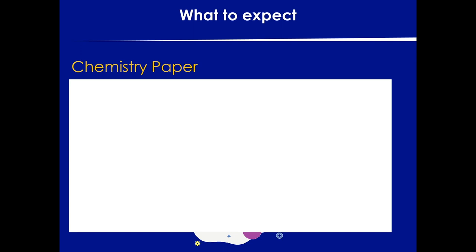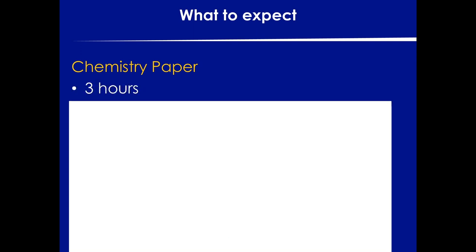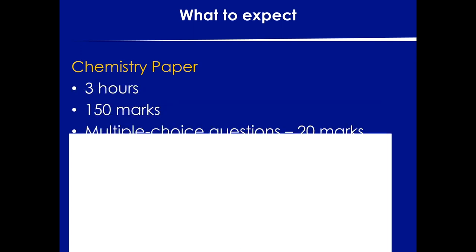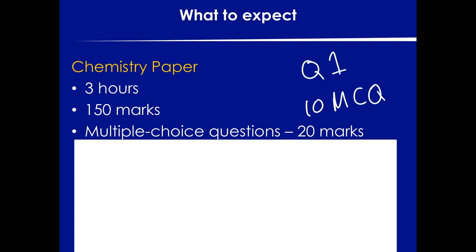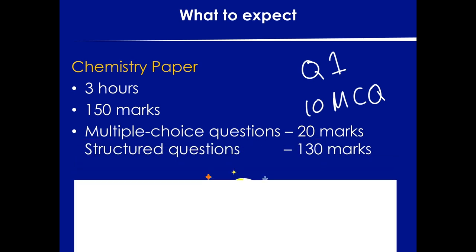Your chemistry paper is a three-hour exam with 150 marks, and it's 20 marks of multiple choice. There are 10 multiple choice questions making up Question 1 — you answer A, B, C, or D — and then 130 marks of structured questions. Question 1 multiple choice questions are two marks each, numbered 1.1 to 1.10.